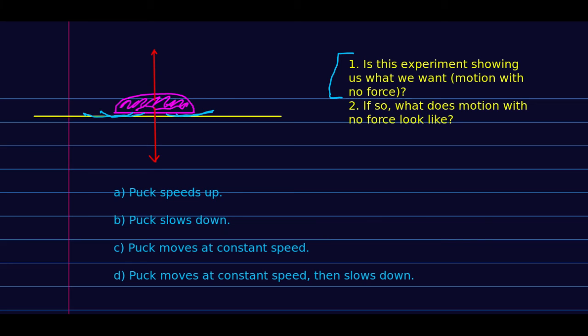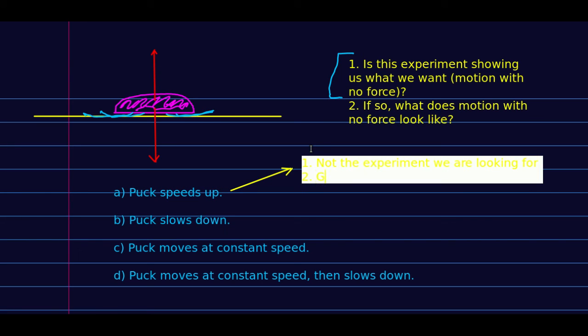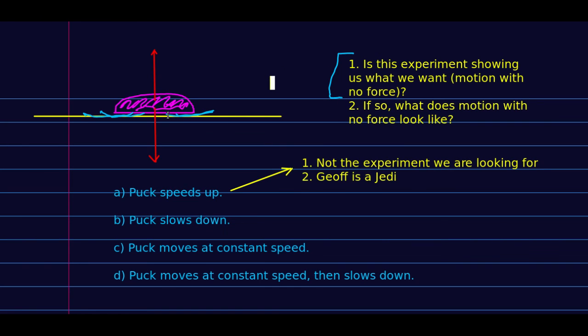So if the outcome of the experiment is that the puck speeds up, then we have to conclude two things. One, we would have to conclude that this is not the experiment we're looking for. Two, we would have to conclude that I am a Jedi. Because if I can exert a force on the puck after it's left my hand, when I'm not touching it, then I am clearly a Jedi.